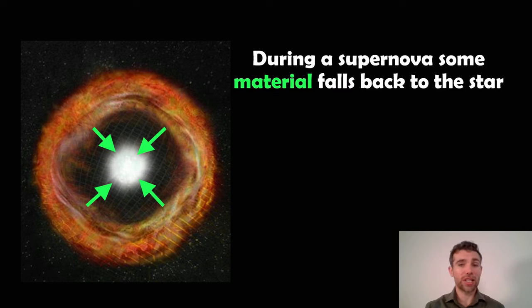Some of that ejected material falls back to the star. The gravitational forces from the remnants basically pull it back in again. You've got some material that falls back onto, I put star, it's not really a star anymore, it's this neutron star or black hole, whatever's left.